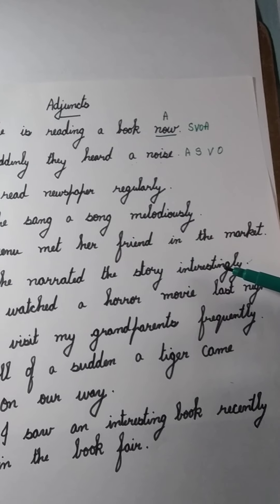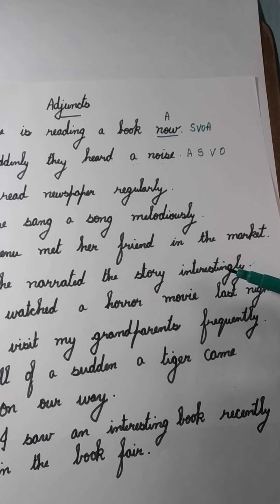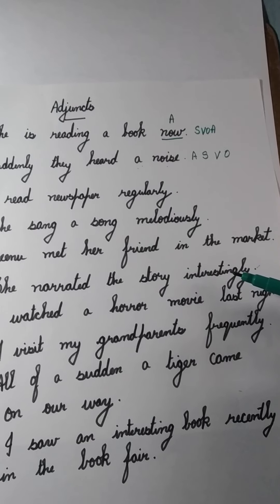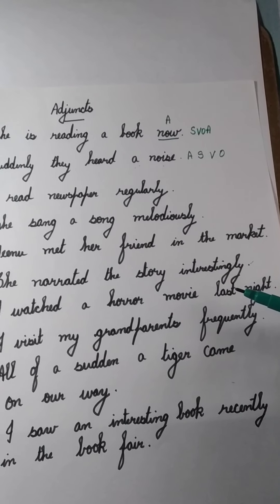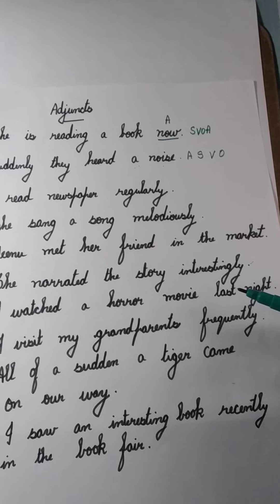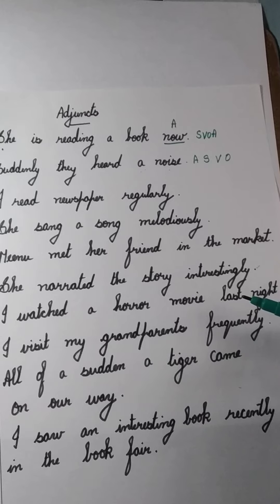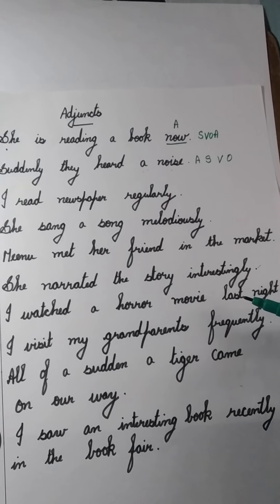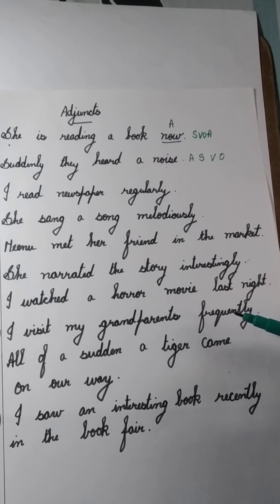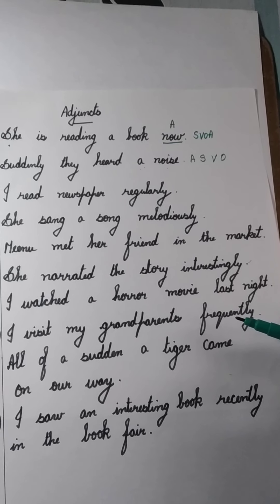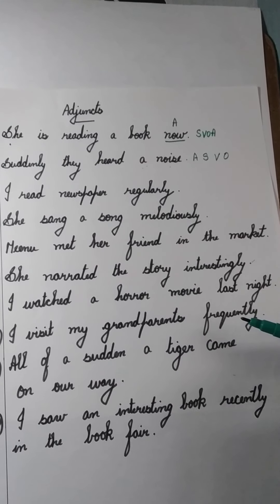She narrated the story interestingly. How did she narrate the story? She narrated it interestingly, so 'interestingly' is the adjunct. I watched a horror movie last night. When did you watch the horror movie? I watched it last night, so 'last night' is the adjunct. I visit my grandparents frequently. How often do you visit your grandparents? I visit them frequently, so 'frequently' is the adjunct in the sentence.